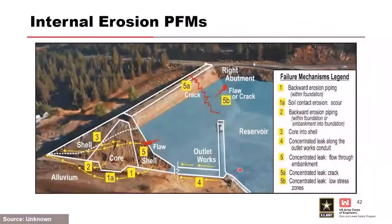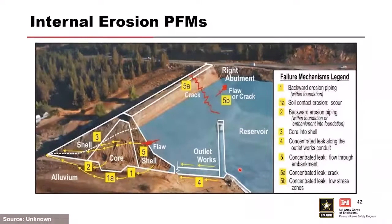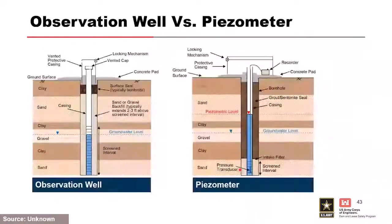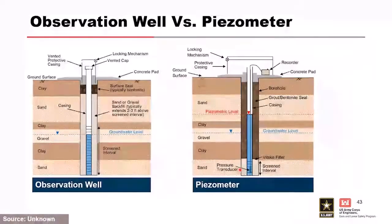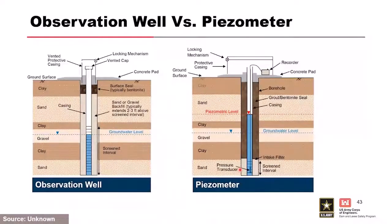Piezometer data is vital to determining internal erosion mechanisms potentially affecting a site — through-embankment, embankment-into-foundation, and through-foundation failure modes. Famous failures like Teton are relevant here. An interesting near-failure is Fontanelle Dam — a reclamation dam that should have failed but was saved only by lowering the reservoir in time. Defensive measures like dumping riprap into a growing void were ineffective; only reservoir drawdown saved it. Teton failed because they could not get the reservoir down in time.